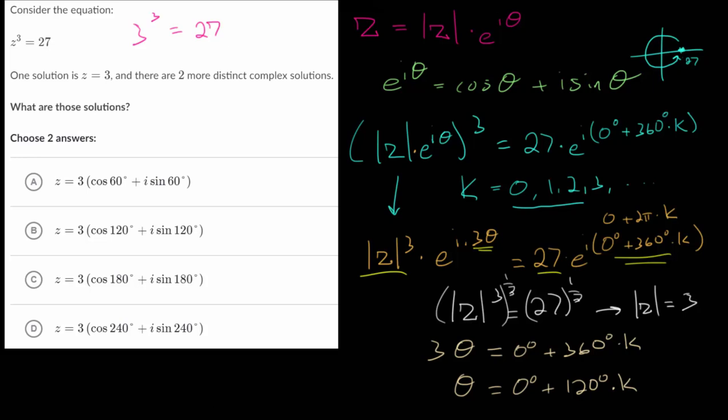And let's call the first solution theta 0. This is when k is 0. And when we plug that in, we just get 0 degrees. When we plug in k is equal to 1, we get 0 plus 120, or just 120 degrees. And when we plug in theta 2, or excuse me, k equals 2, we get 0 plus 120 twice, so that would be 240 degrees.